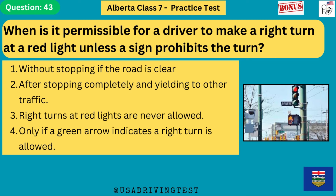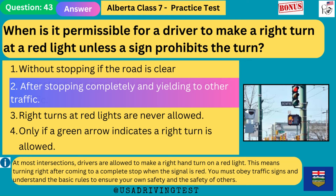When is it permissible for a driver to make a right turn at a red light unless a sign prohibits the turn? 1. Without stopping if the road is clear. 2. After stopping completely and yielding to other traffic. 3. Right turns at red lights are never allowed. 4. Only if a green arrow indicates a right turn is allowed. The answer is 2: after stopping completely and yielding to other traffic. At most intersections, drivers are allowed to make a right-hand turn on a red light after coming to a complete stop when the signal is red.